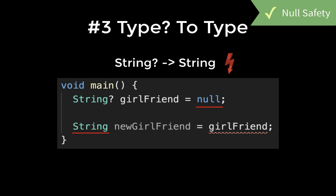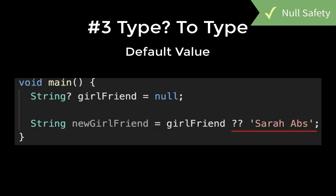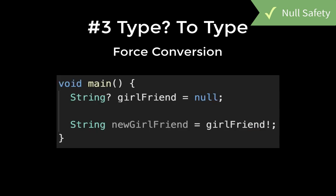We have three possibilities to fix this issue. The first one is checking if our variable is not null, and if it is null, we do not execute the code below. Secondly, we can add a default value — so in case our nullable girlfriend variable is null, we assign a default string value. Lastly, we can convert a nullable value to a non-nullable value by using an exclamation mark.